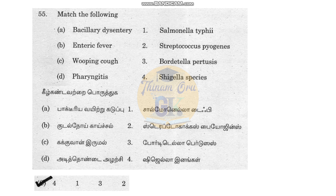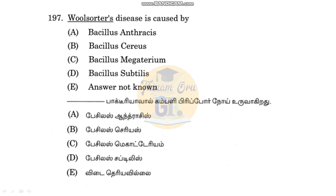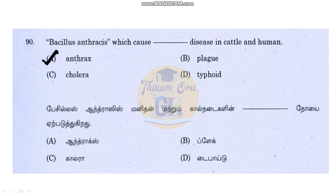Continuing with bacterial diseases: Anthrax is caused by Bacillus anthracis, also known as Woolsorters' disease. Inhalation of Bacillus anthracis spores causes anthrax. Bacillus anthracis is the causative organism for anthrax.